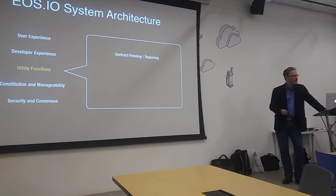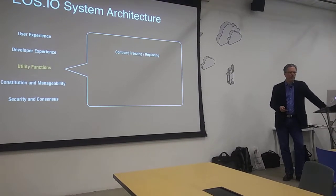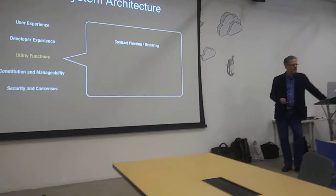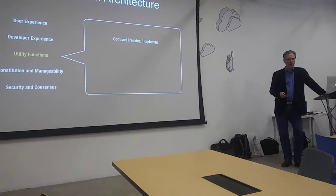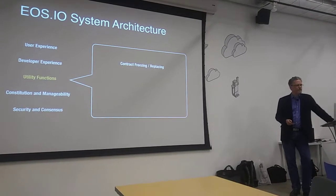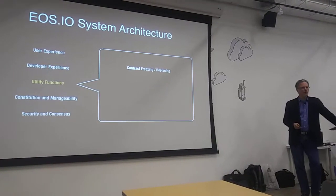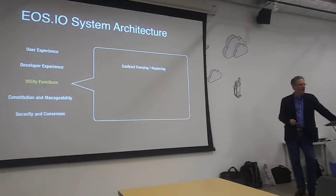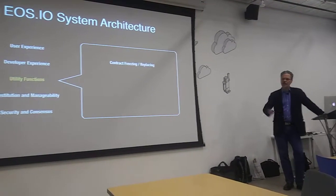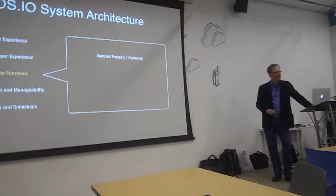Crucial utility functions like the ability to freeze and replace a malfunctioning contract. No one in this room will ever write bug-free code. Any code that's meaningful when you deploy it, something will happen. And if you're on a totally immutable blockchain that does not have a feature like this, you could be in deep trouble.